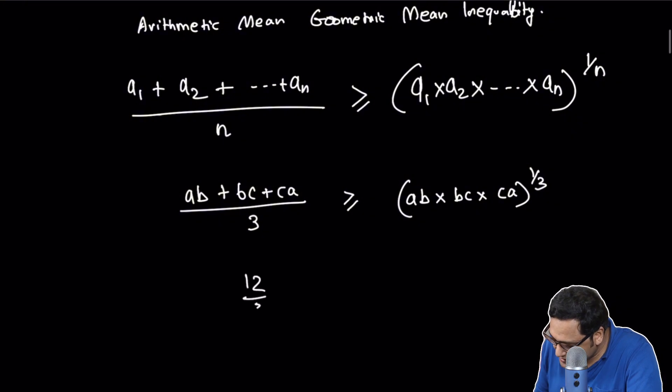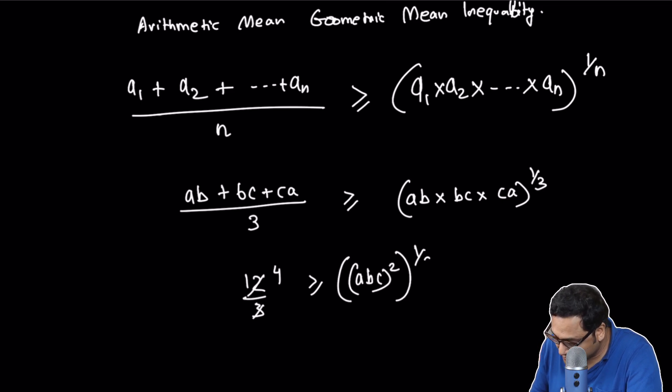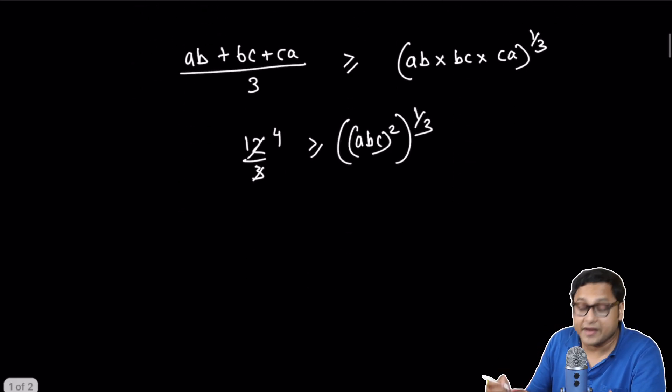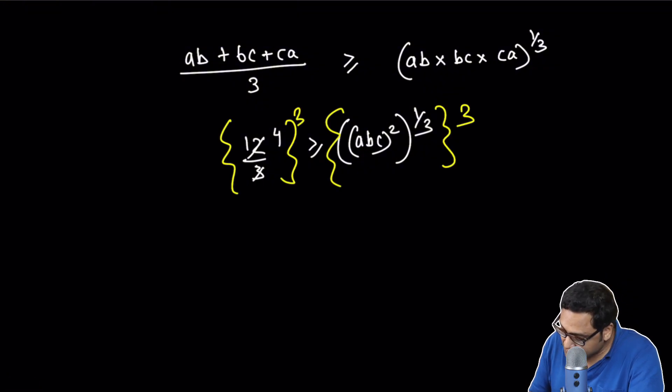So 12 by 3, that is 4, is greater than or equal to ABC whole square raised to the power 1 third. Now I can raise both sides to the power 3.